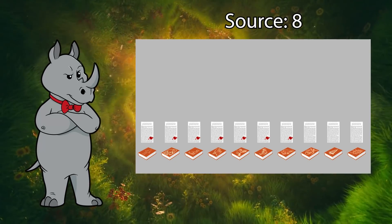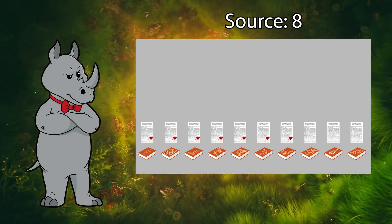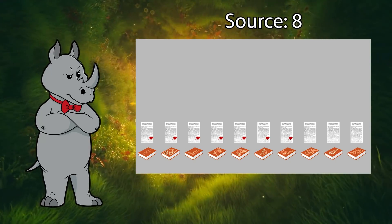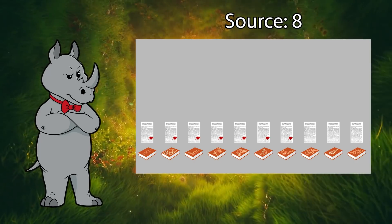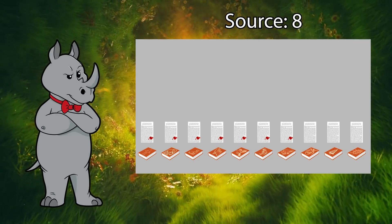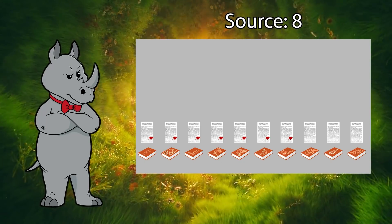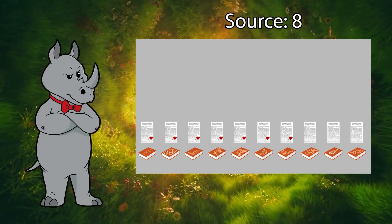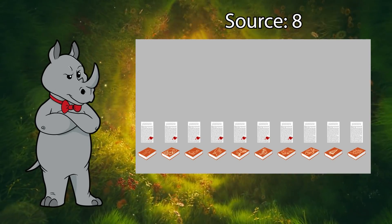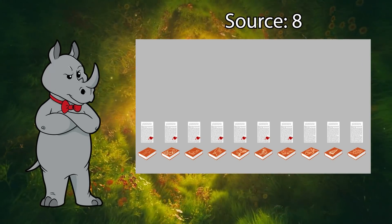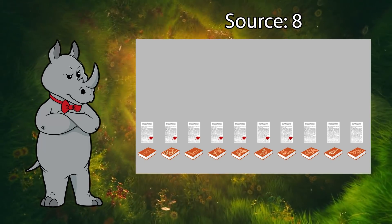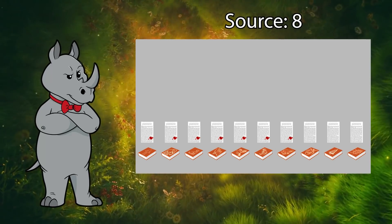While there is an incredibly minuscule chance that seven individual pasta sauce splattering events created an identical splattering pattern on the page, it is far more likely that there was a splatter on the original, and then the other copies were photocopied from that. So the three unsplattered copies were made, then the splatter happened, then the seven splattered copies were made. So we can see that all 10 books shared a common book ancestor, but the seven splattered books are more closely related to each other than to the unsplattered books.